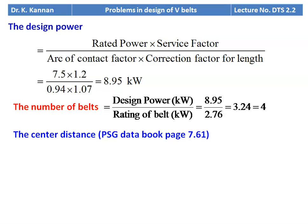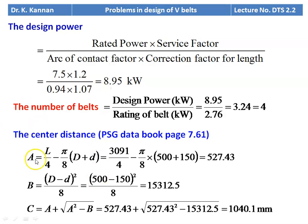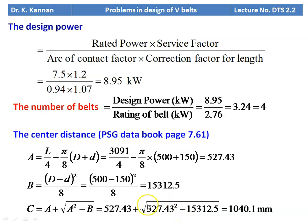Actual center distance from equation page 7.61: A = 3091/4 − (π/8)(500 + 150) = 527.43; B = (500 − 150)²/8 = 15031.5; C = A + √(A² − B) = 527.43 + √(527.43² − 15031.5) = 1040.1 mm. The given value was 925 mm, but the corrected actual center distance is 1040.1 mm.